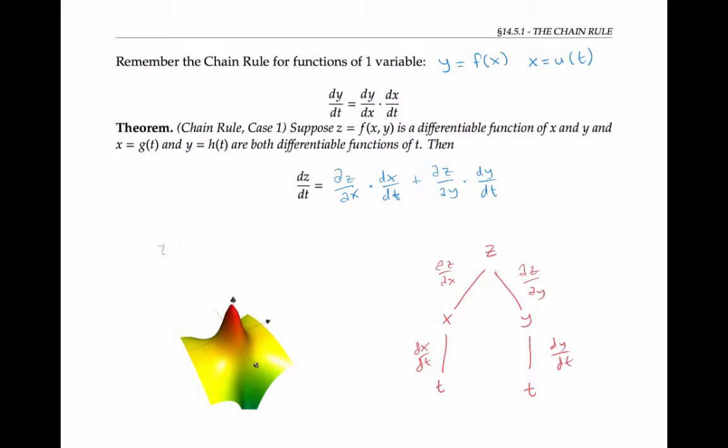Graphically, we can think of z as the height of a function of x and y. If we think of t as time, then we can think of taking a path through time along the xy plane. dz/dt is telling us how the height, our height changes over time.